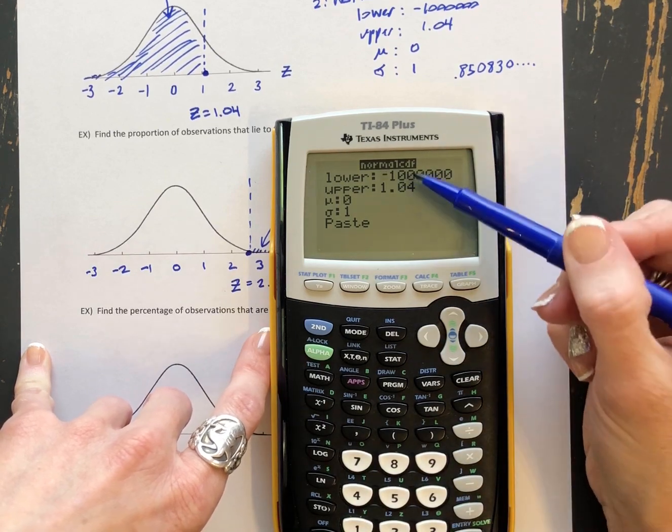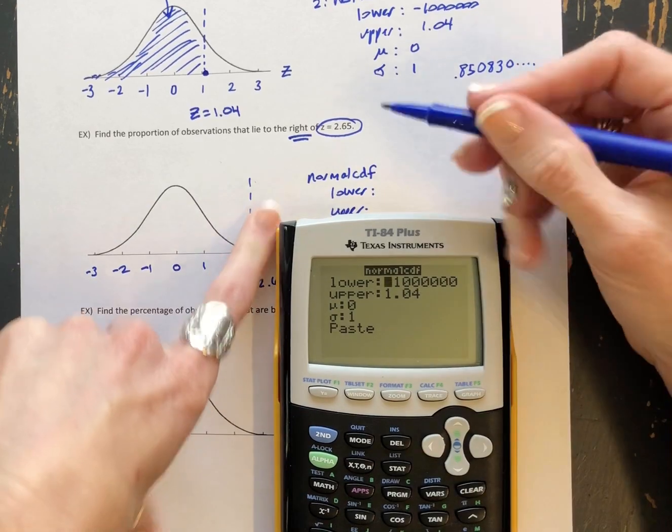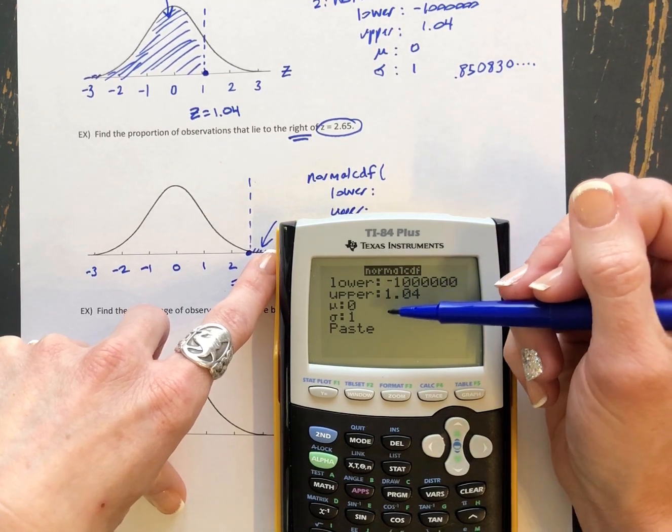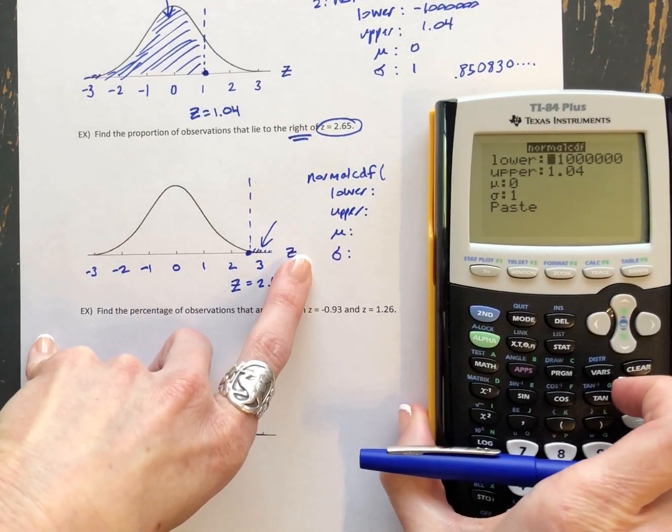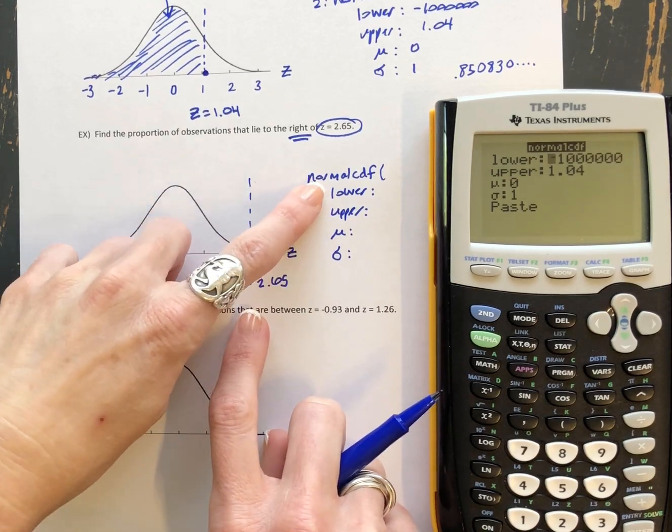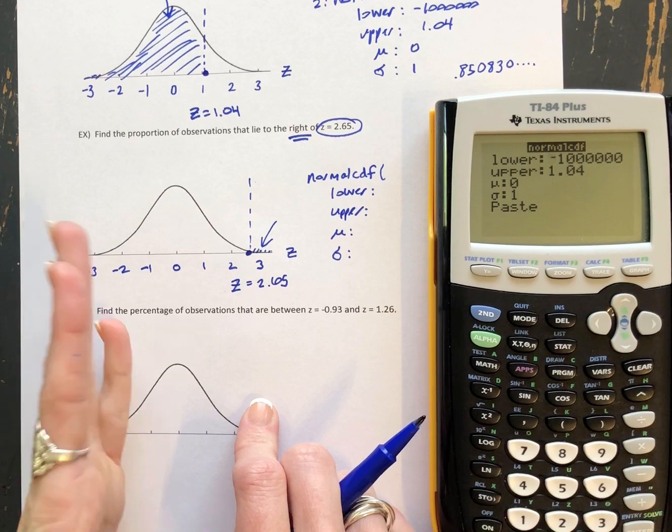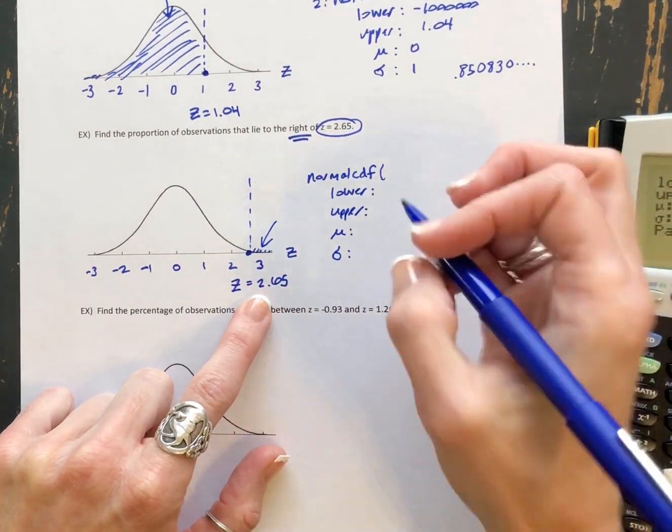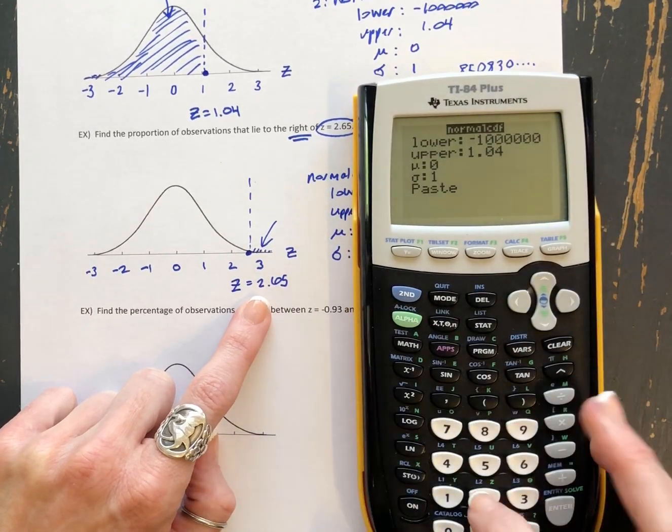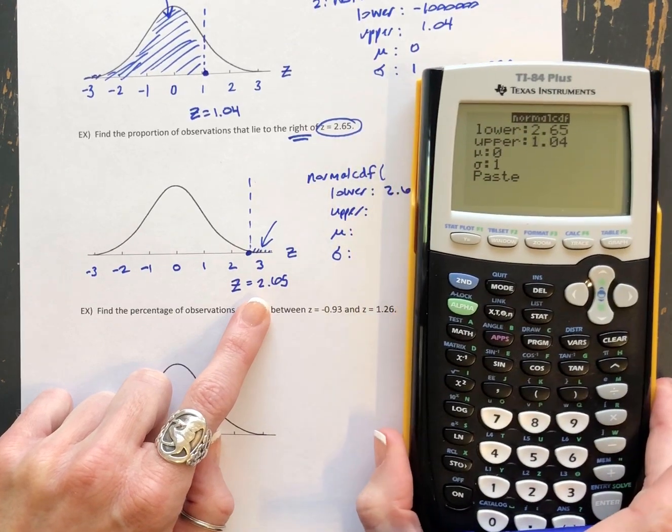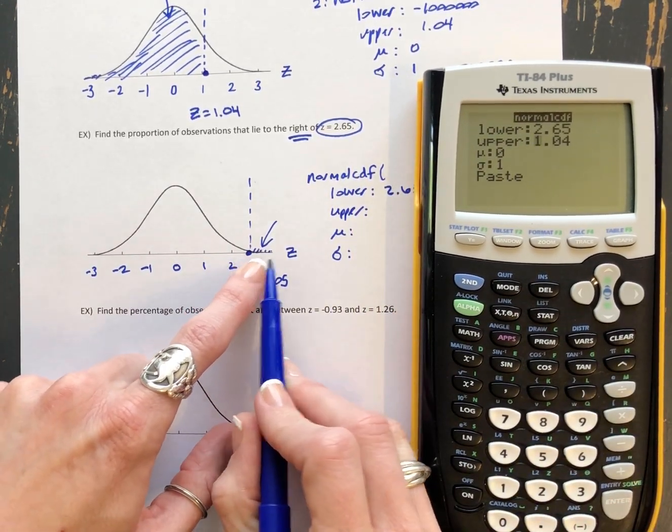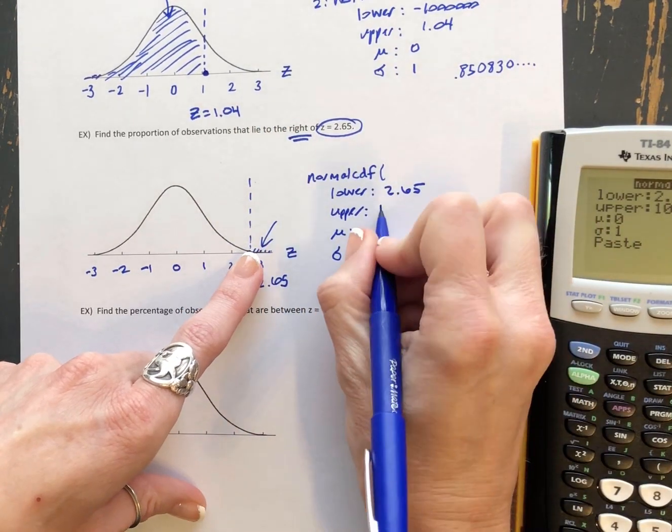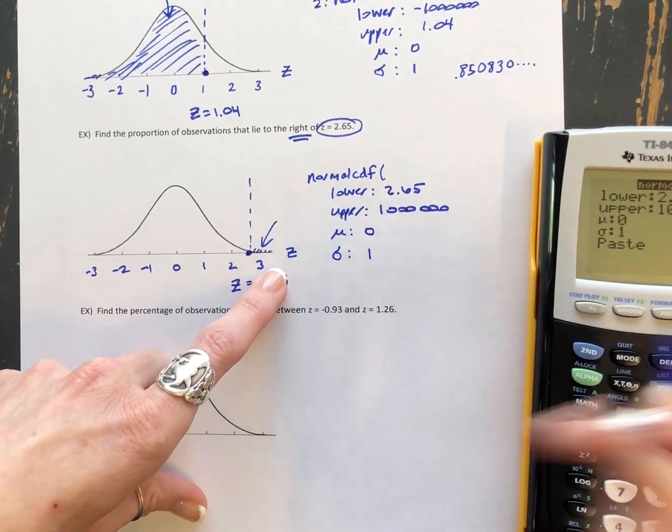By the way, if you have an older calculator, it's not going to give you this menu. And it's just going to say normal CDF with a parenthesis and wait for you to type things in. Again, you'll just type in comma-separated lower, upper, mu, and sigma. In this case here, if we look at our curve again, our lower, remember I said lower is always going to be the leftmost value where we want to start finding area. So in this case, the leftmost value where I start finding area is right here at 2.65. The upper, so where do I stop? Well, I'm going on up to positive infinity. So I'm just going to use positive a million. Mean is still 0, standard deviation is still 1.